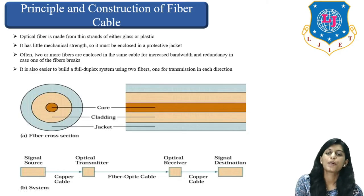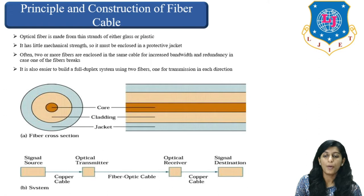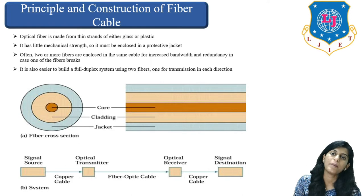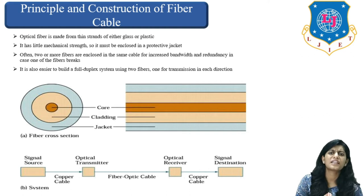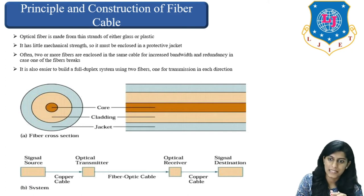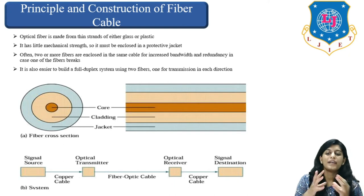Let us discuss the principle and construction of fiber cable, or optical fiber. Optical fiber is made up of thin strands, which can be made either from glass or from plastic. It has little mechanical strength — glass is a very fragile material — so it must be enclosed in a protective jacket.